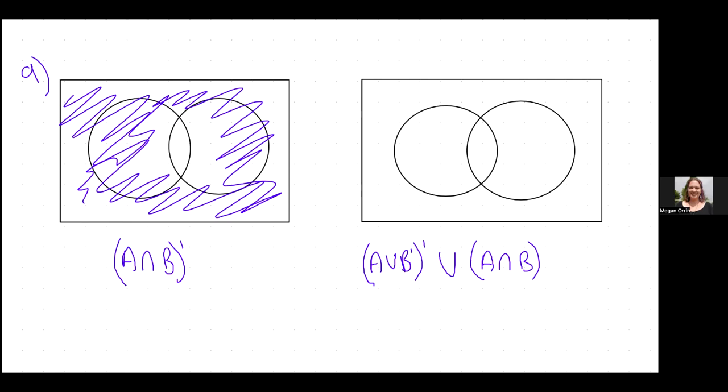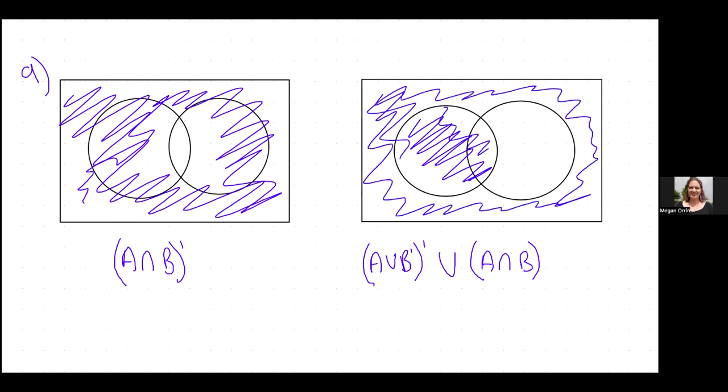The union means all of both things. So I've got A and I've got not B. So I've already colored in the rest of it. So I want all of A and all of not B,